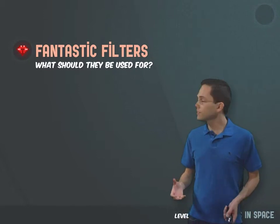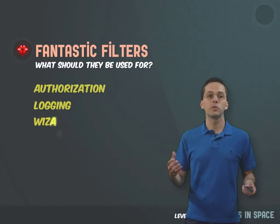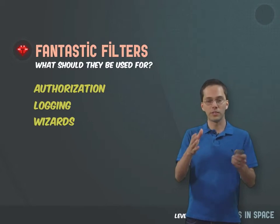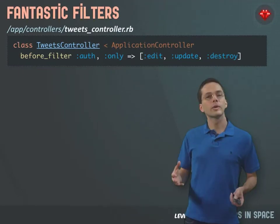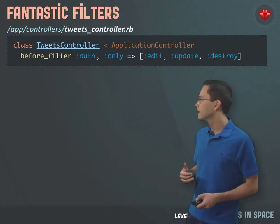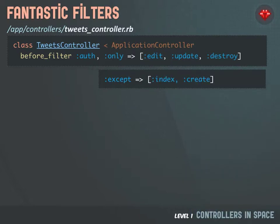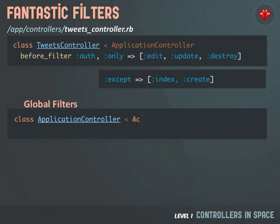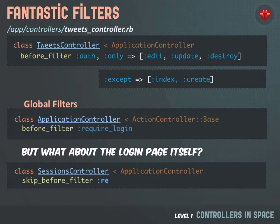So what are some good examples of where you do want filters? If you have any sort of authorization, that's a good use of filters. Any sort of logging. Or maybe you have a wizard — a multi-step form — where you might want to control some of that through a filter. You can use the only keyword, or the except keyword to specify which actions shouldn't run this filter. If you want a filter to run across all actions in all controllers, you can put it in your application controller. In this case, if we're requiring login, we don't want it across all pages — for example, we wouldn't want it on our sign-in form. So we might want to use the skip_before_filter syntax.